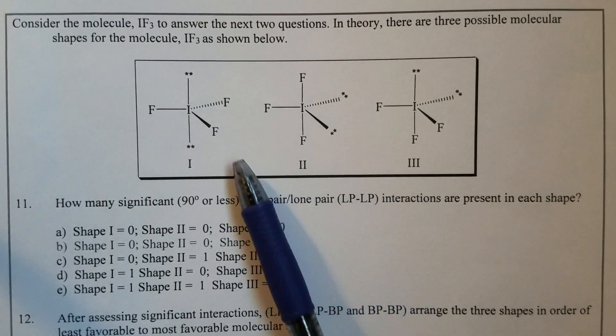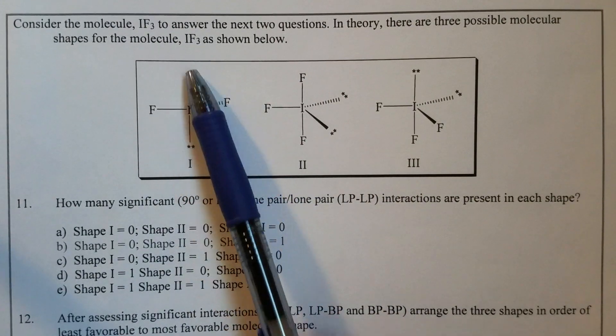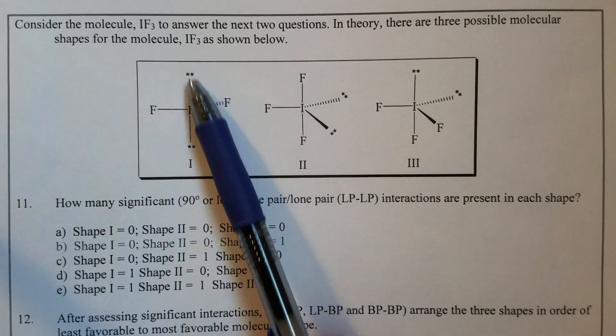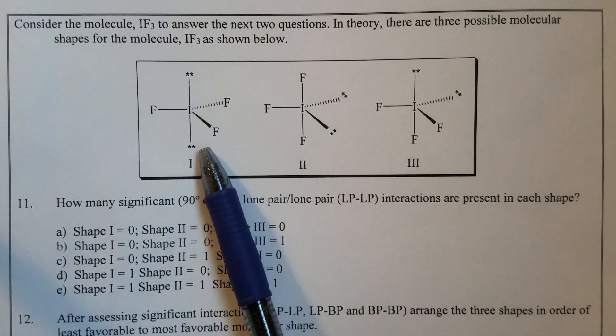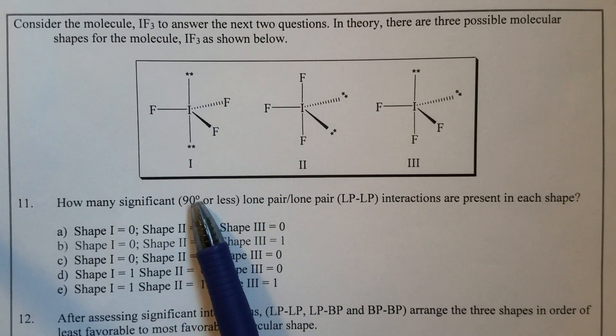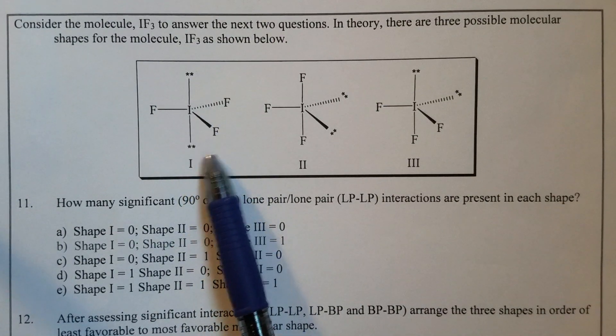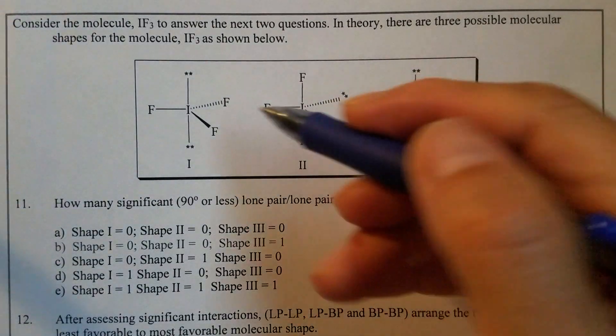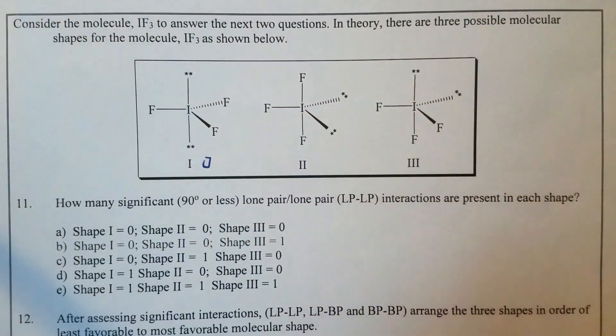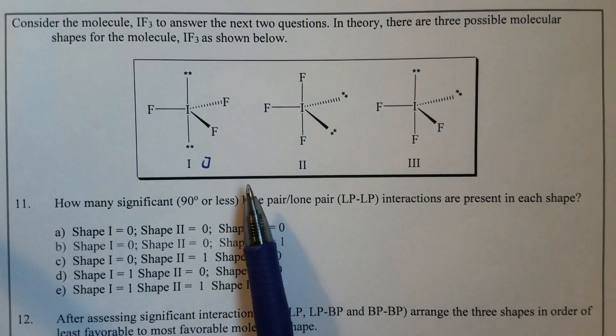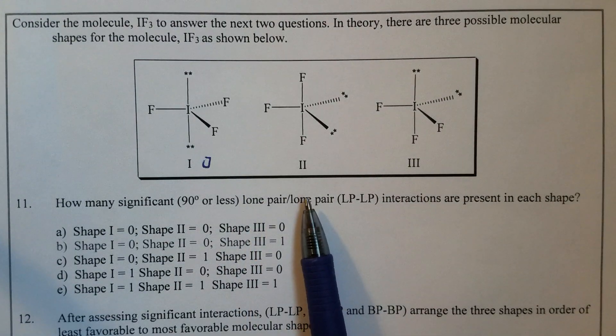Let's take a look at number one. The two lone-pairs, they are apart. That's 180 degrees, so that's greater than 90. Therefore, the interaction here in this one should be zero. So shape one has zero lone-pair-lone-pair interaction.